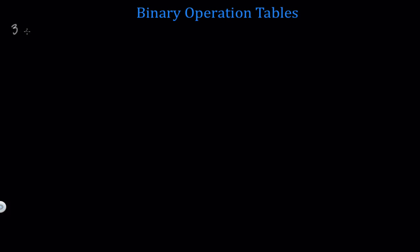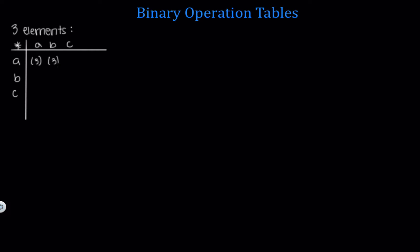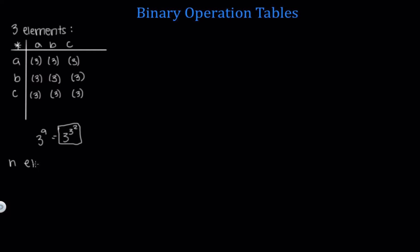Now let's do the same thing but with three elements instead of two. Let's see how many different ways we can fill out this binary operation table with elements A, B, and C. A star A has three options, A star B has three options, and every spot on our binary operation table has three different options. So that tells us we have three to the ninth, or three to the three squared, different binary operation tables on a set with three elements. Generalizing, a binary operation table with n elements has n squared spots and each spot has n choices, giving n to the n squared different tables.